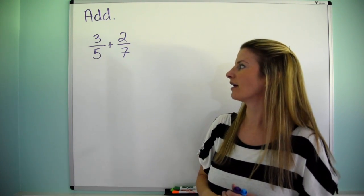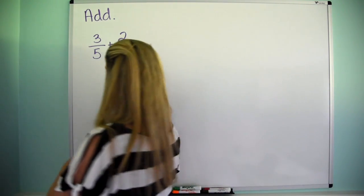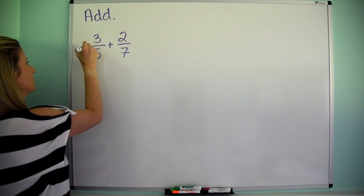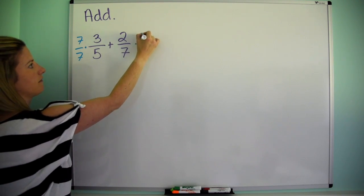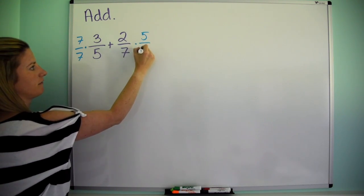So common denominator is going to be 35, so what we're going to do is we're going to take this and multiply it by 7 over 7, and we're going to take this and multiply it by 5 over 5.